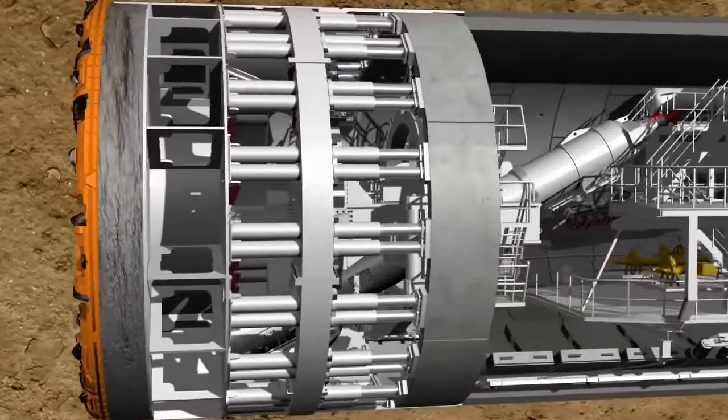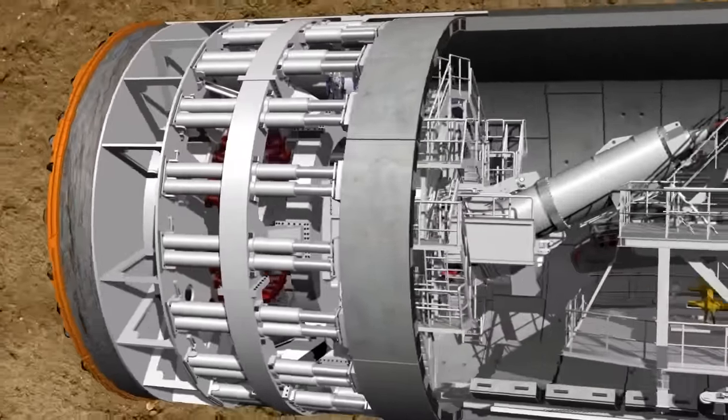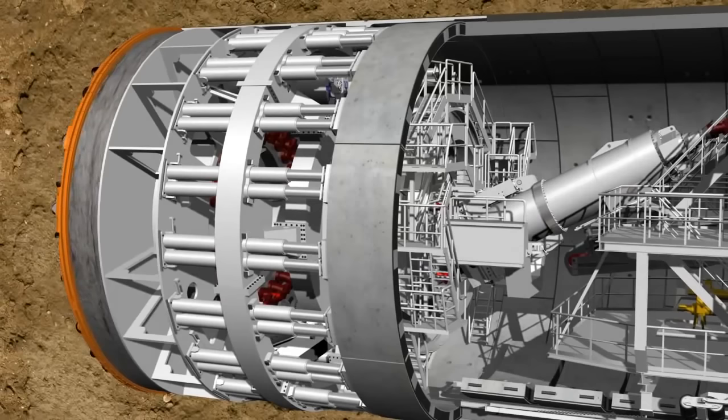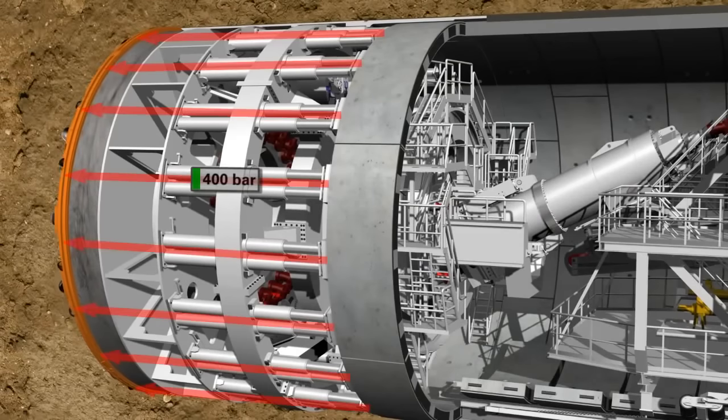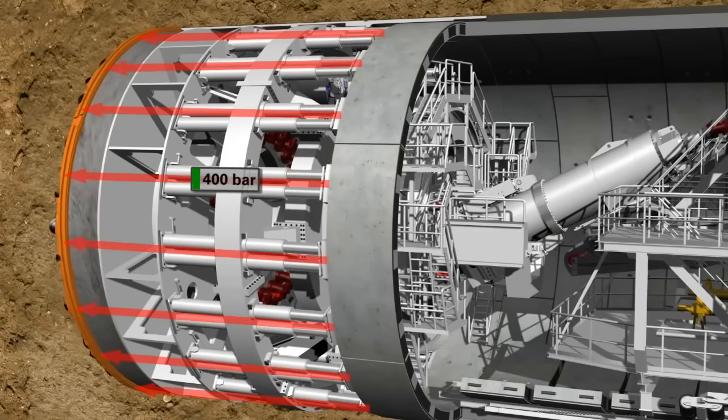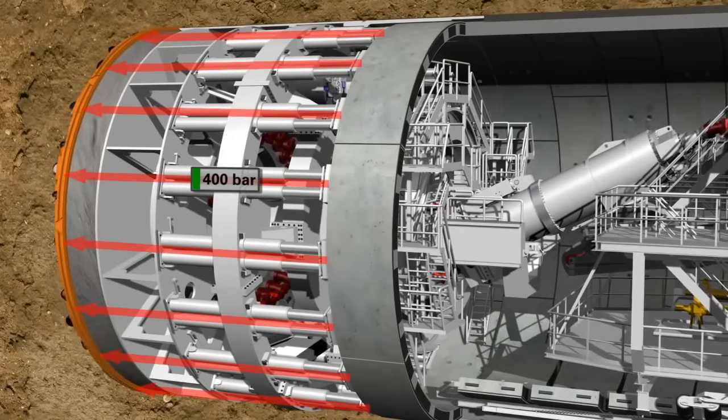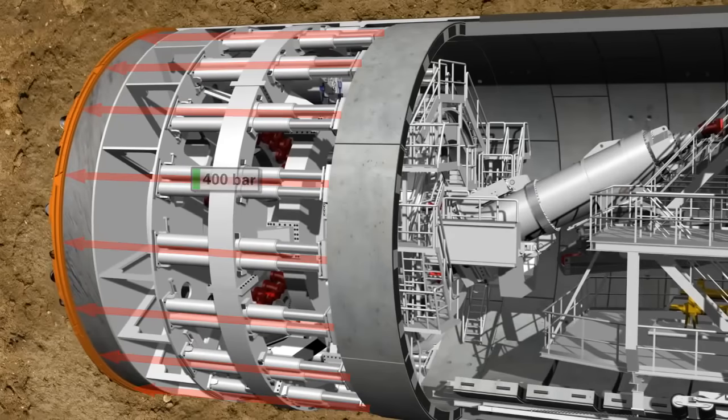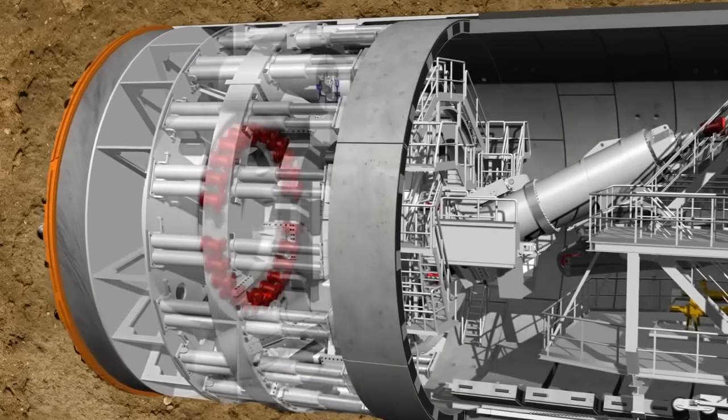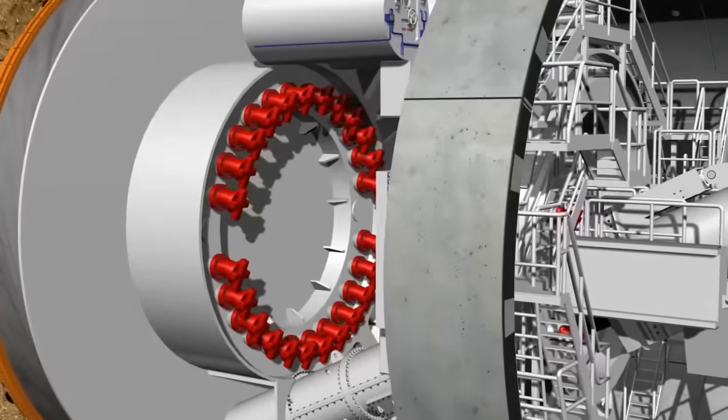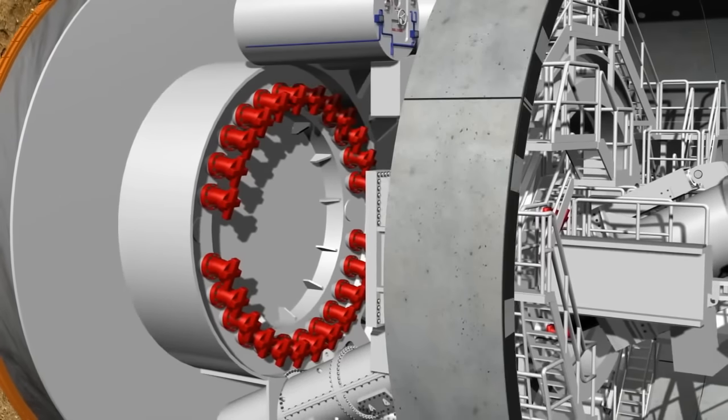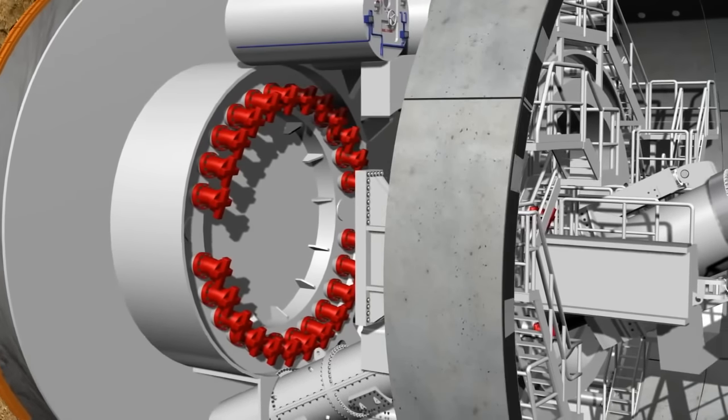During the tunneling phase, the cutting wheel, which rotates at a speed of up to 2.7 revolutions per minute, is pressed against the tunnel face with a pressure of up to 400 bar by means of hydraulic cylinders. 24 hydraulic motors drive the cutting wheel via a gear rim, developing a drilling torque of up to 38,000 kilonewton meters.